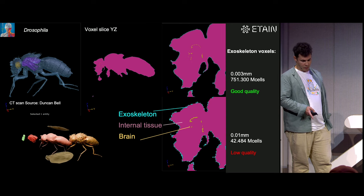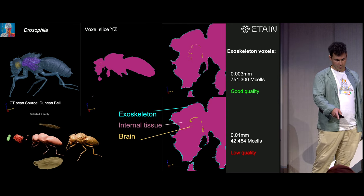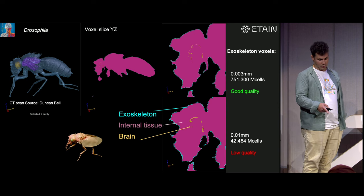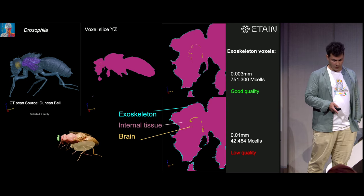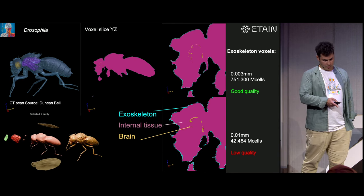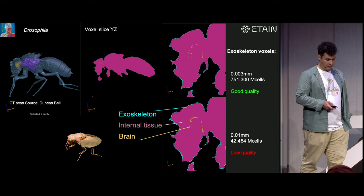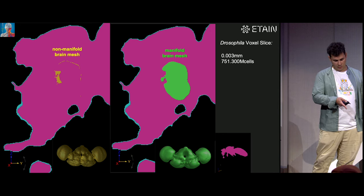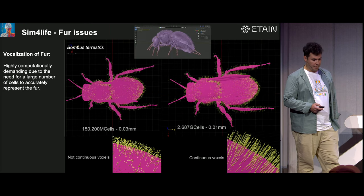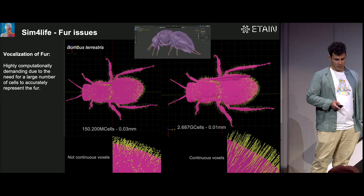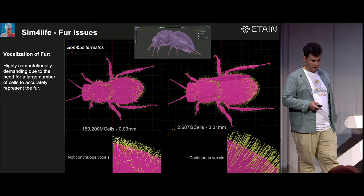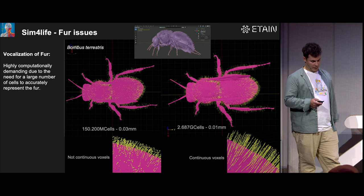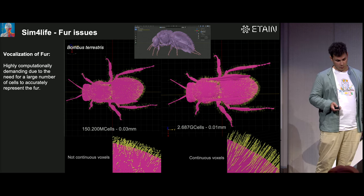Here's an example of how the exoskeleton appears in these models. If the resolution is too low, it looks pixelated; with good resolution it appears more continuous. This is an example of a Drosophila fly simulation. If the meshes are not watertight, the simulation doesn't work well. The fur is also complicated during voxelization because very thin grids are needed to handle it correctly — we are exploring alternative approaches, such as clumping the fur instead of generating individual spikes.